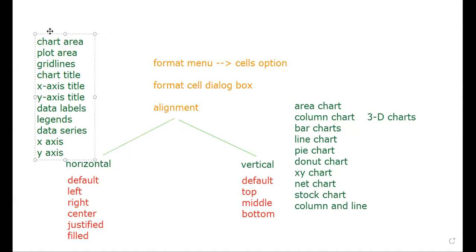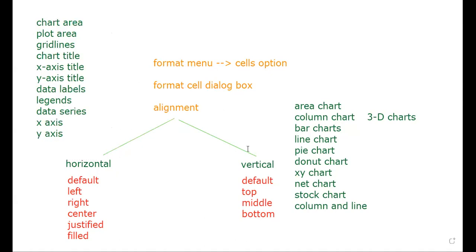Chart area is the total area covering all components of the chart. Plot area is the area where data is plotted, inside the X and Y axes. Grid lines are horizontal and vertical lines running across the chart. Chart title is the descriptive title given to the chart — used when you want to give a heading or descriptive text to a chart.